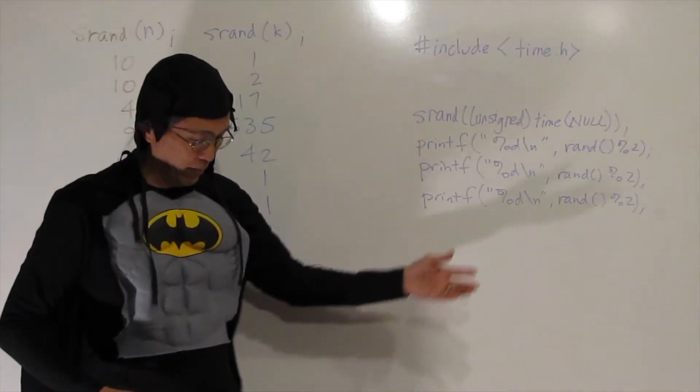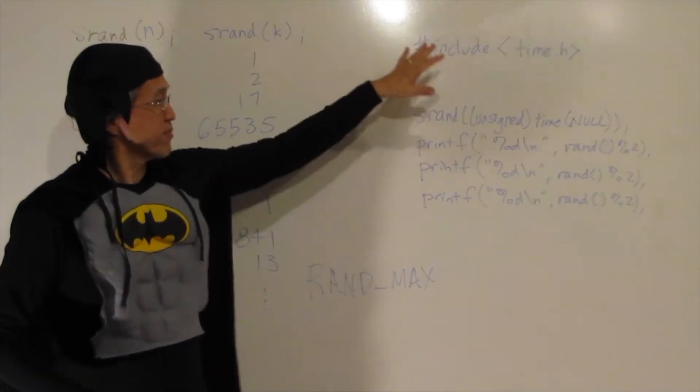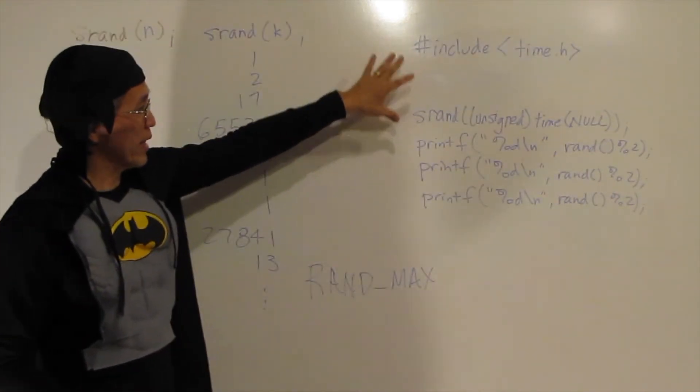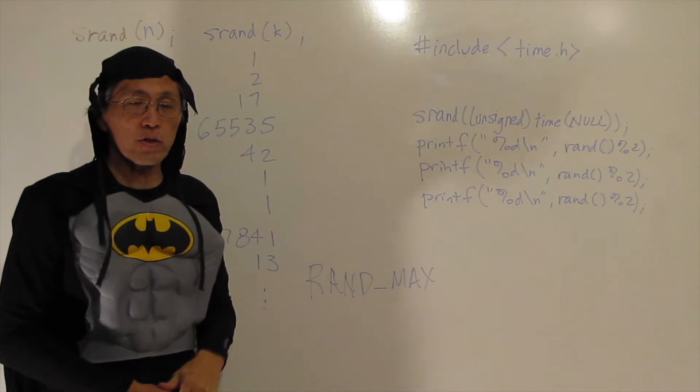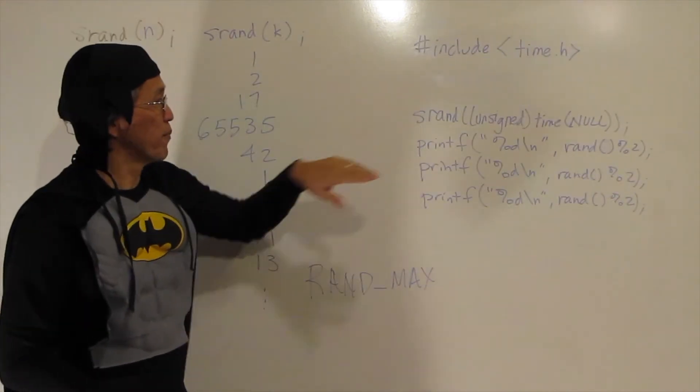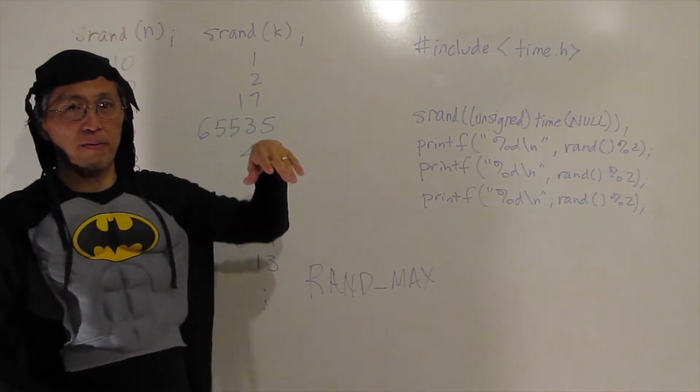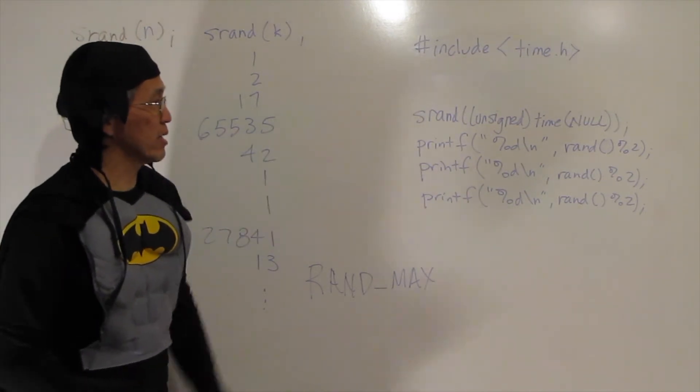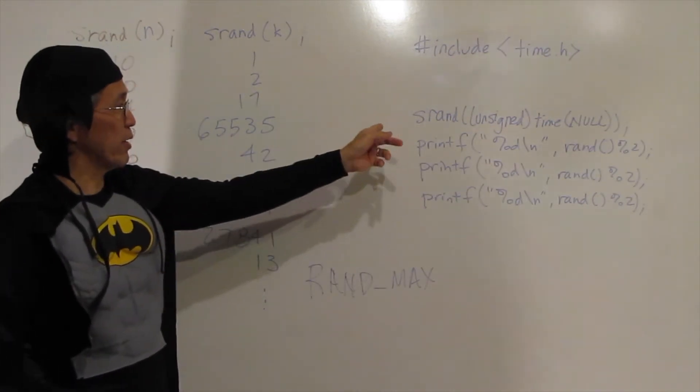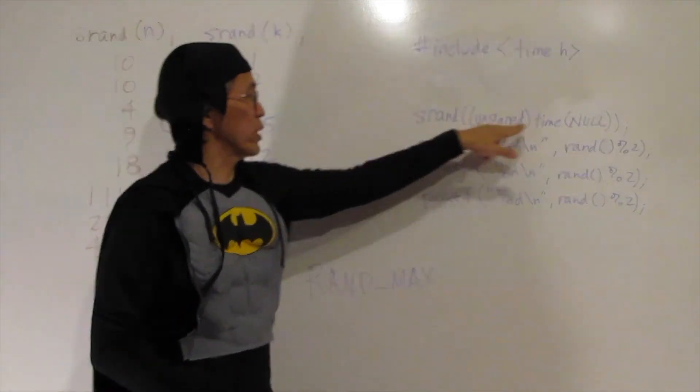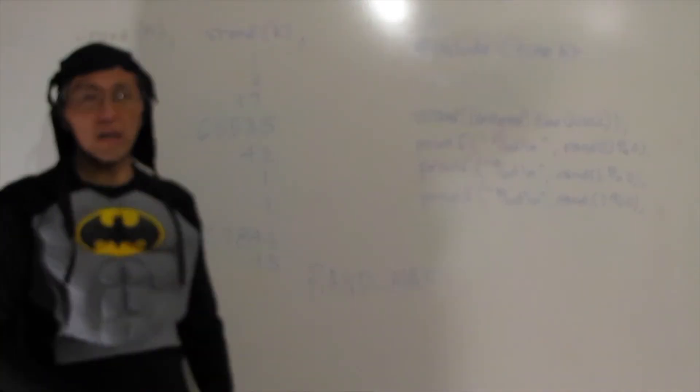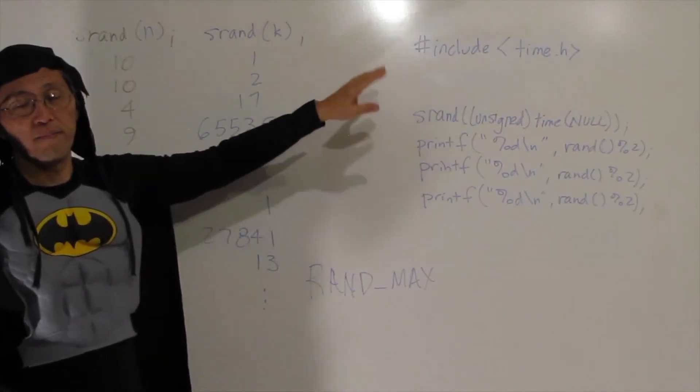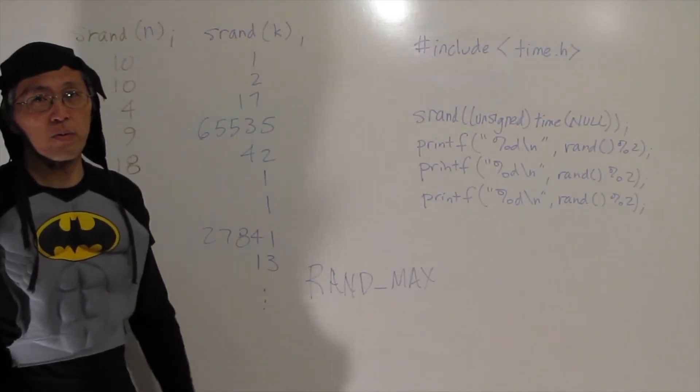Now, here is a little code snippet. First of all, you need to have pound include time dot h to get a random number, just a random seeded random number generator or list. And we use this SRAND unsigned time null to get a different random number seed every time we run the program.